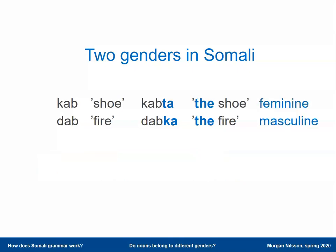Well, these two genders in Somali are called feminine and masculine, like in French or in Arabic. The 'ta' ending marks feminine nouns, whereas the 'ka' ending marks the masculine nouns. And these notions — masculine and feminine — are maybe in some ways misleading, because one shouldn't think too much about sex. There is nothing specifically feminine about a shoe, and there is nothing specifically masculine about a fire. So this is very arbitrary.